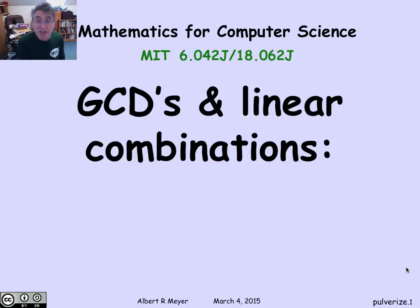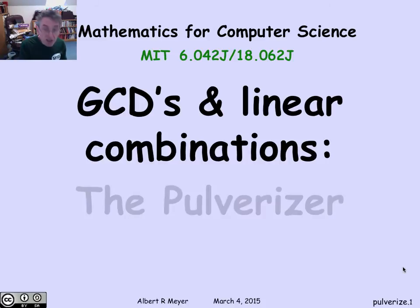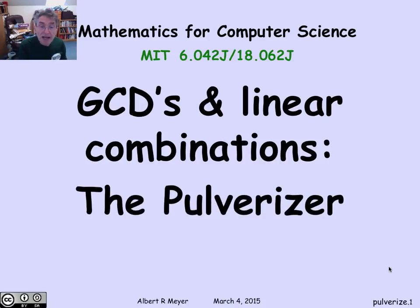Let's continue our examination of GCDs and linear combinations and the Euclidean algorithm by examining what's often called the extended Euclidean algorithm. It's a good name for it. Its ancient name, dating back to ancient India, is the pulverizer. And we will see what that does in a moment.